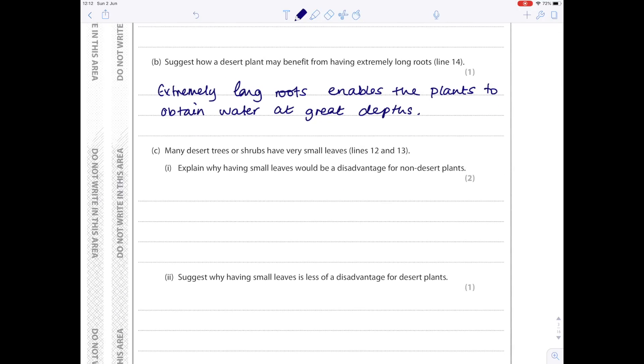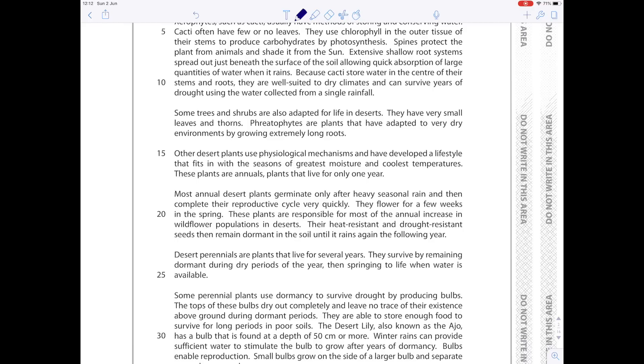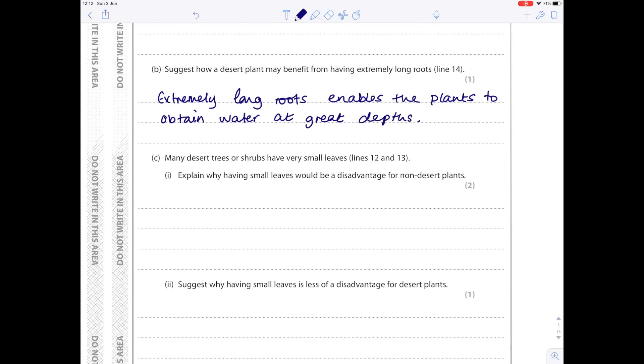Many desert trees or shrubs have very small leaves, lines 12 and 13. Explain why having small leaves would be a disadvantage for non-desert plants. The passage doesn't tell us anything useful. So why don't you want to have small leaves if you're a regular plant? Well, why do plants have leaves? It's so they can carry out photosynthesis and produce glucose and have their own food. So if you had smaller leaves, then you wouldn't photosynthesize as much because there would be fewer chloroplasts.